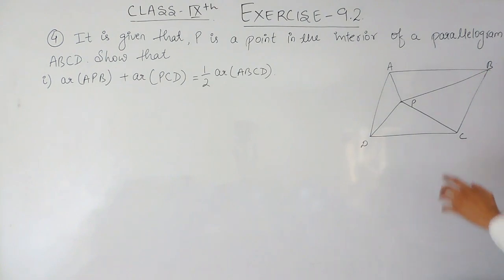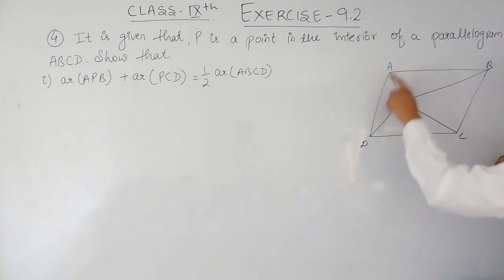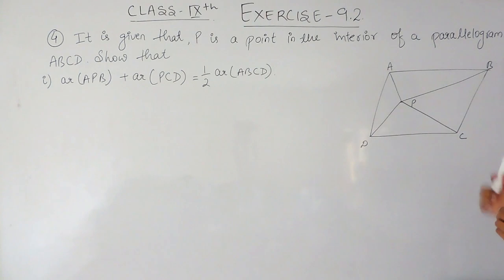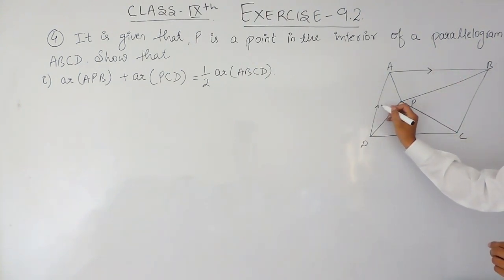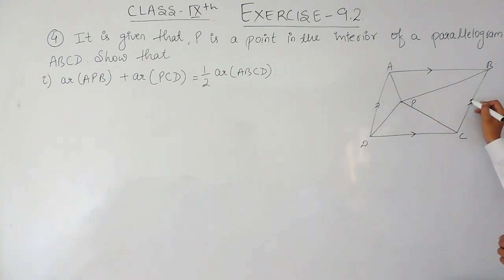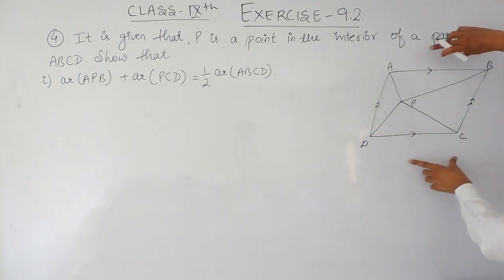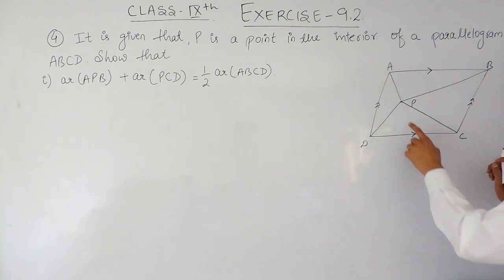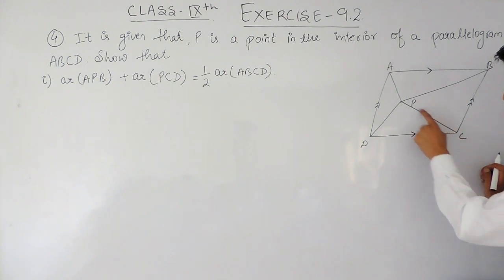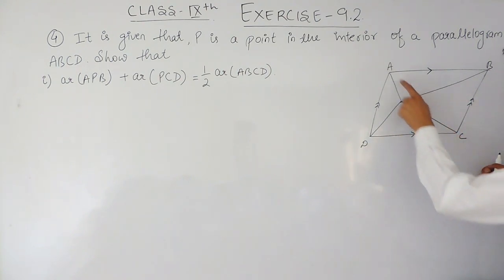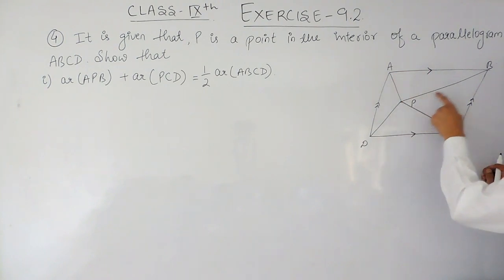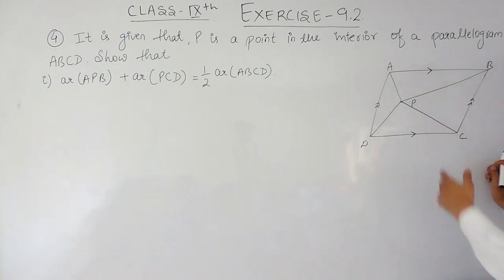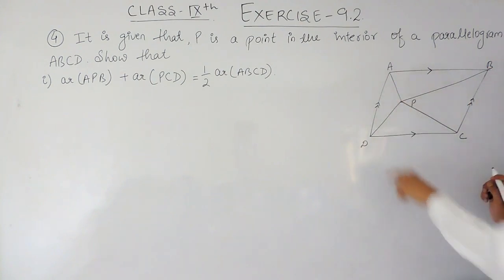This is a parallelogram ABCD in which the opposite sides must be parallel. A parallelogram has equal and parallel opposite sides — these two sides must be equal and parallel, and these two sides must be equal and parallel. You have to prove that the sum of the areas of triangles DPC and APB is equal to half of the area of this parallelogram.